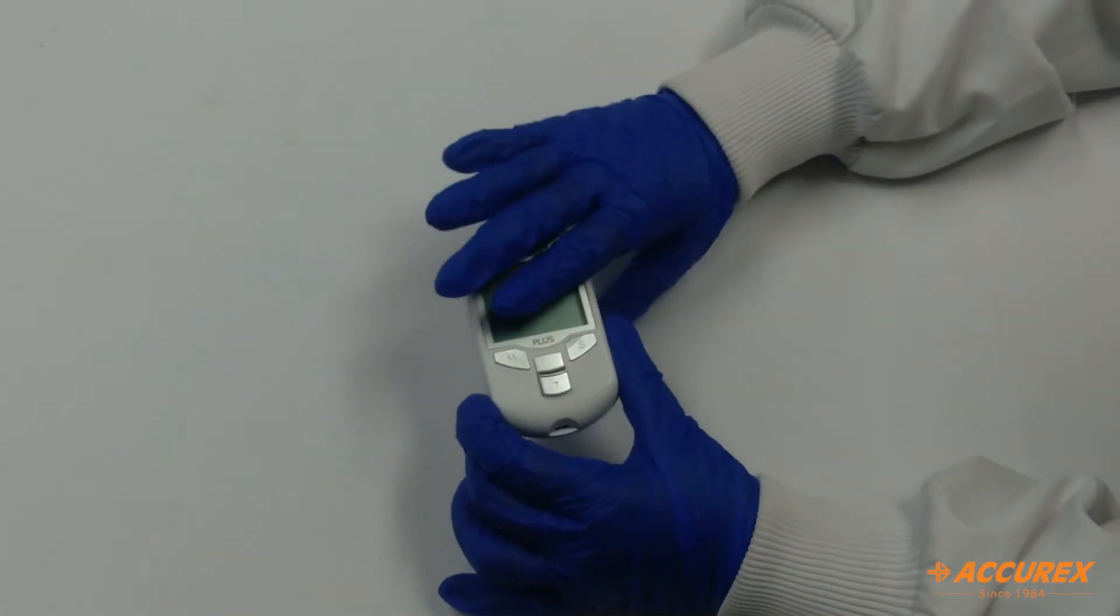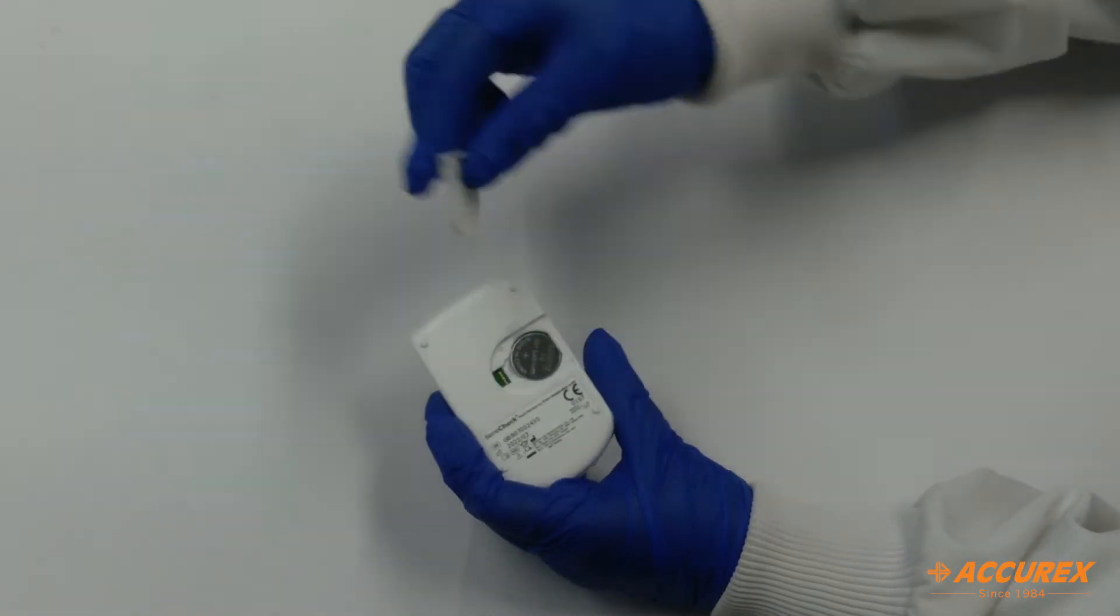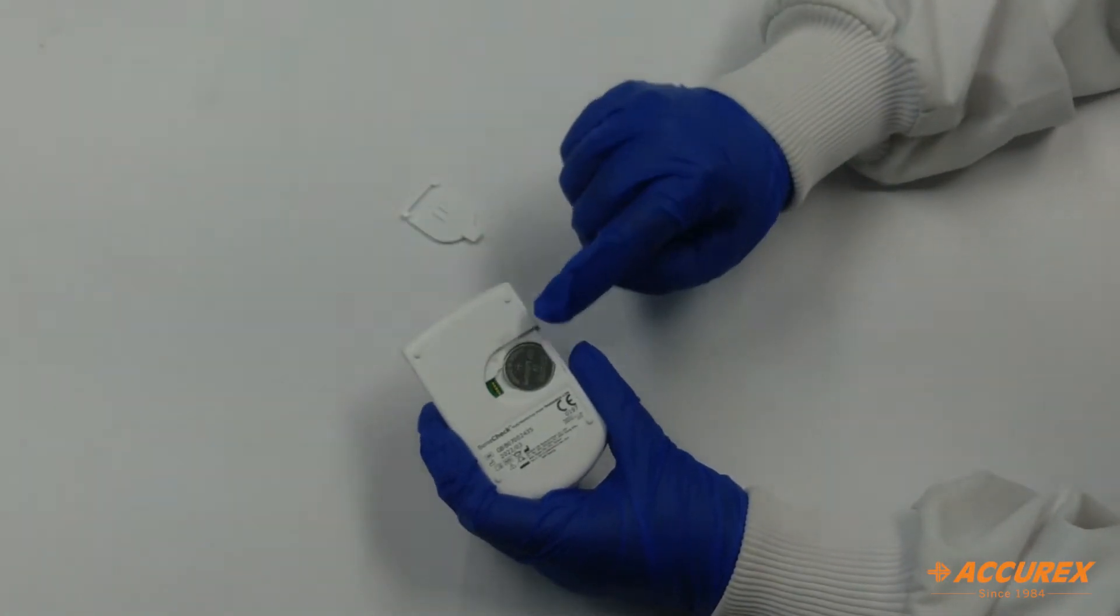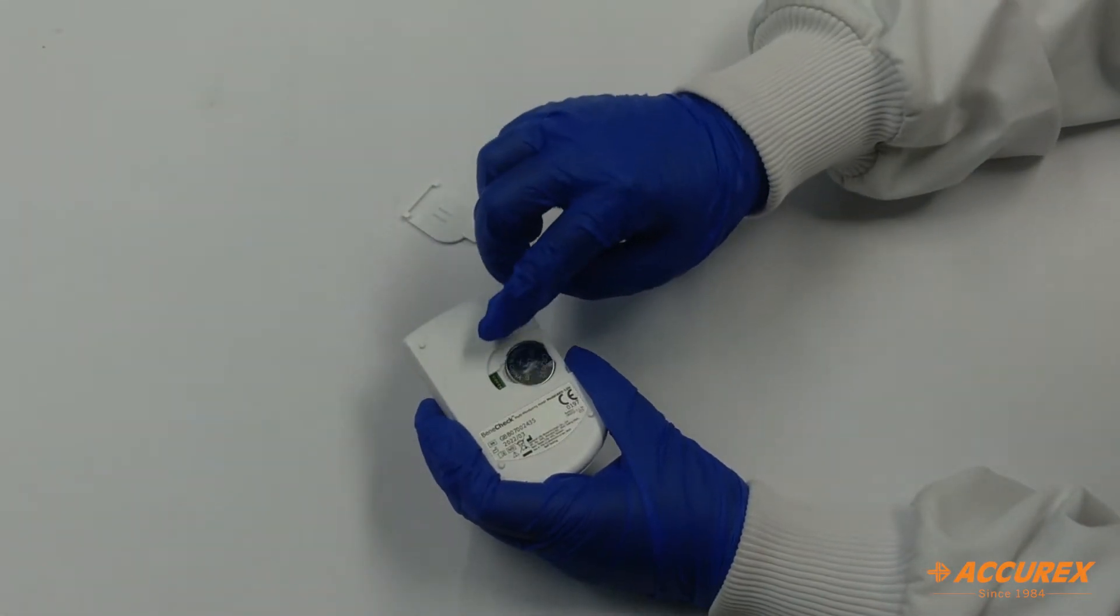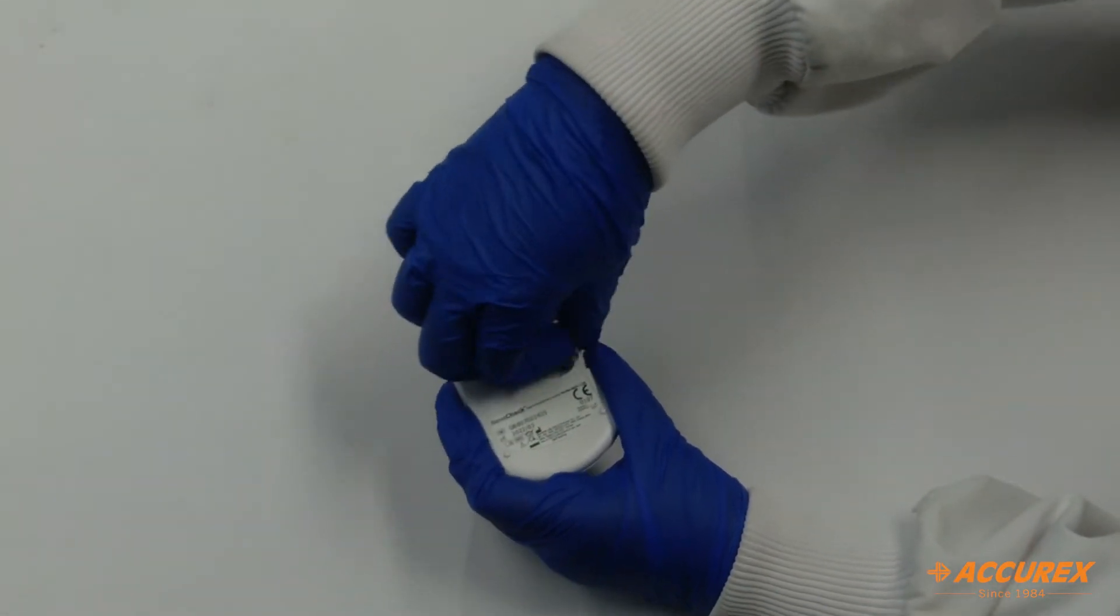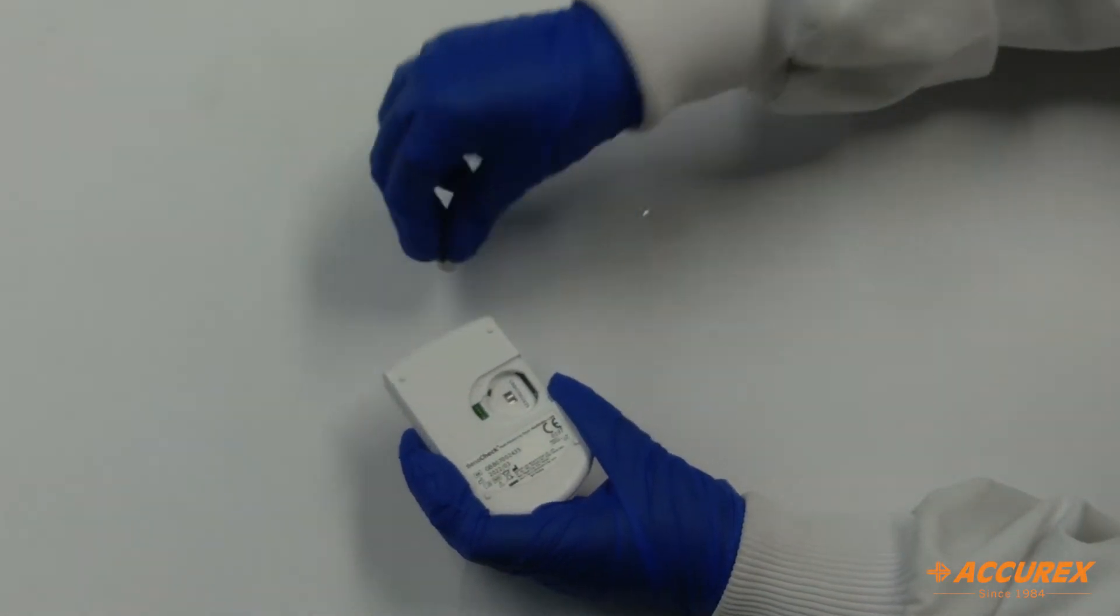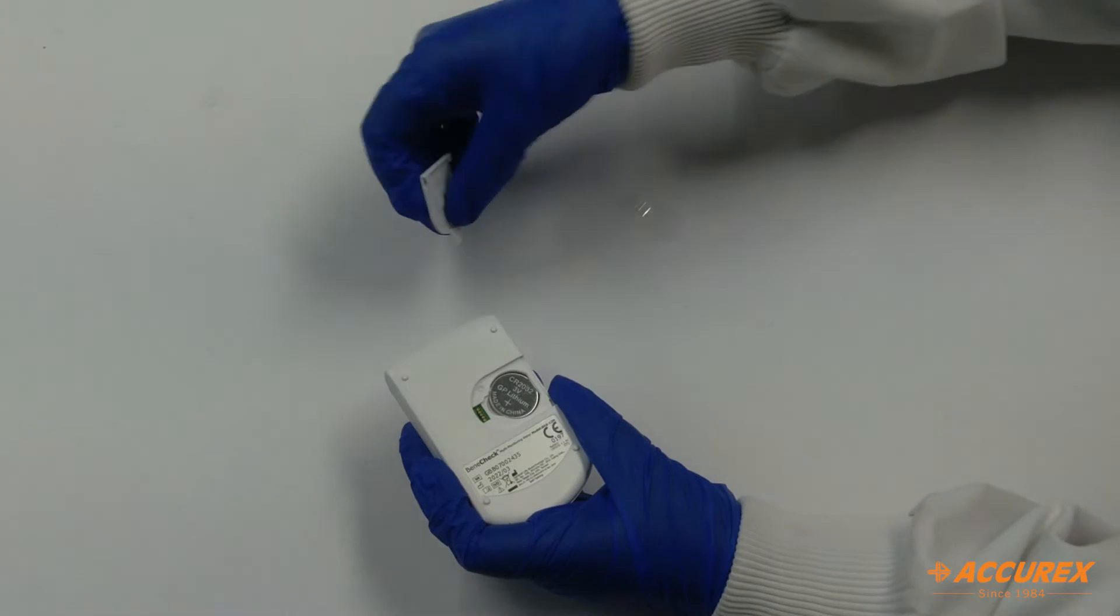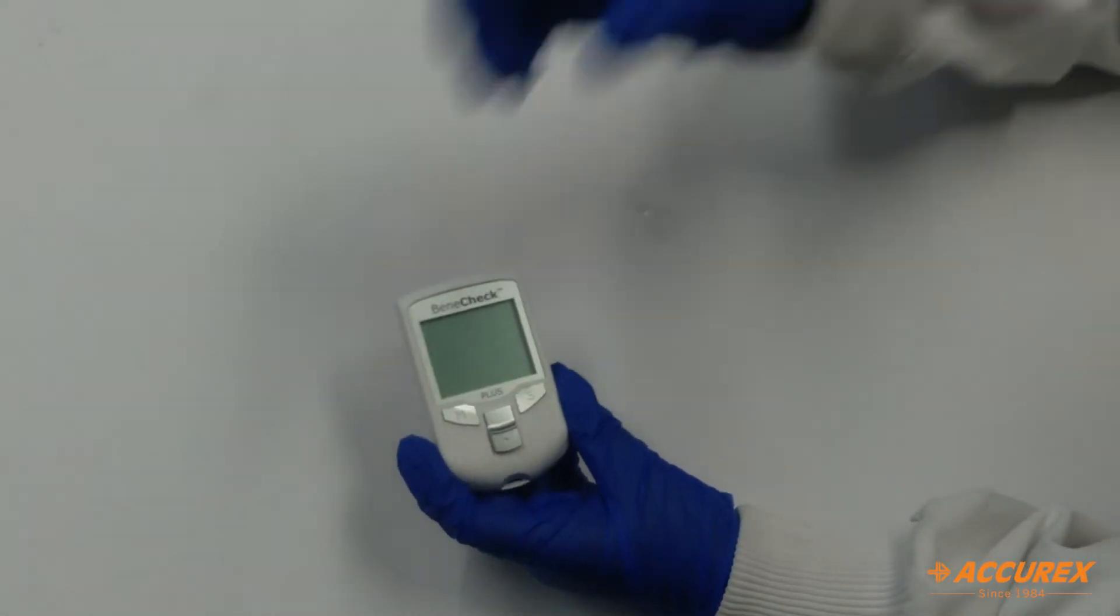Now we will see how to turn on this meter. From the back side you just need to pull this and there is a battery given over here but below the battery there is a plastic sheet. You need to remove this plastic sheet. Remove the lithium battery, remove this plastic sheet and then insert this lithium battery and close the lid. The meter will be switched on.